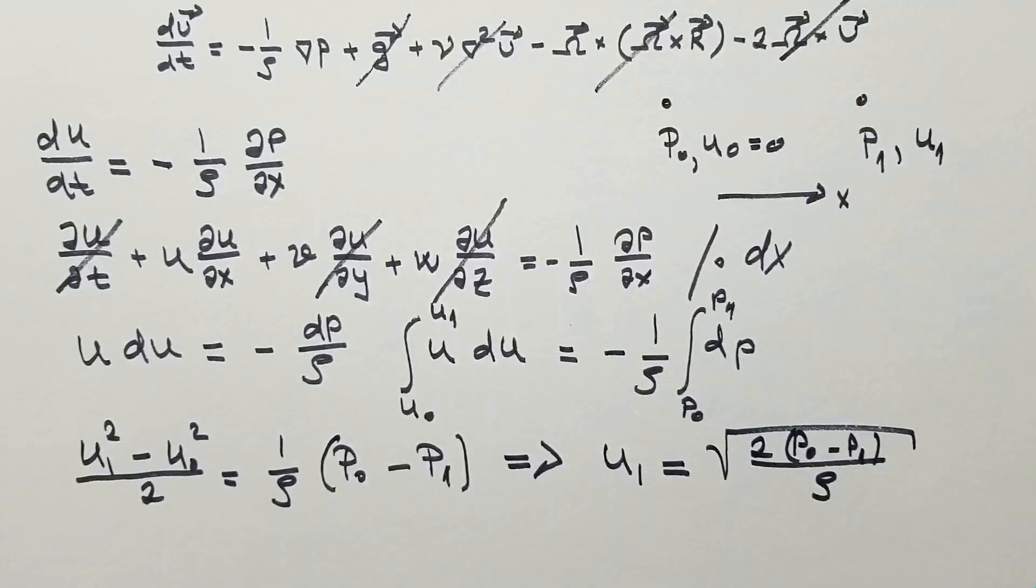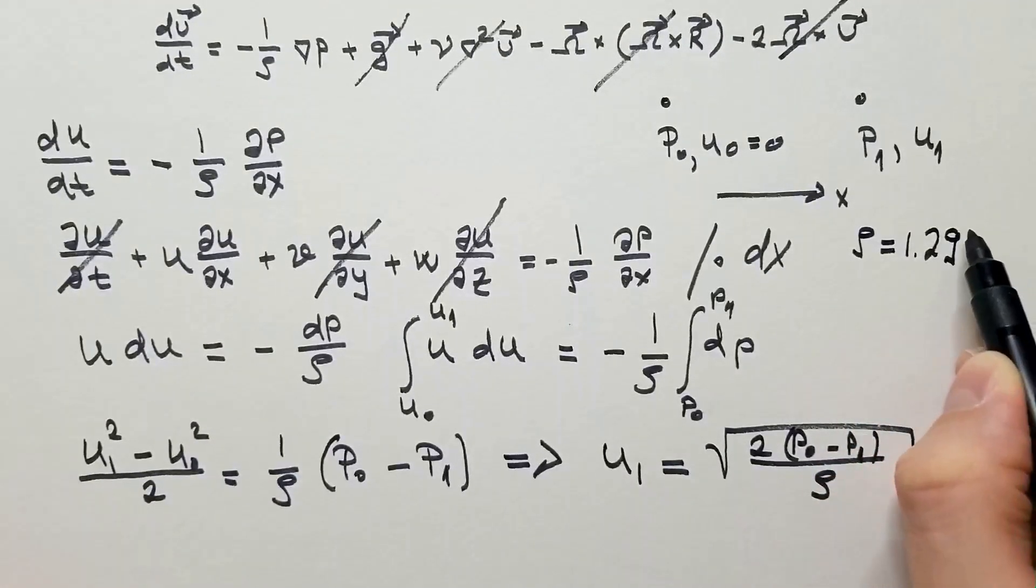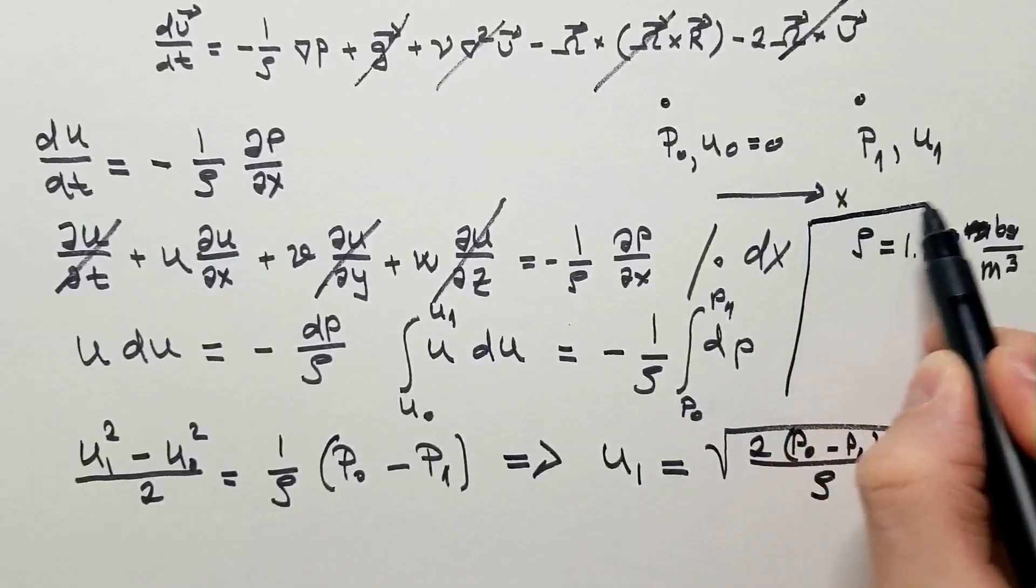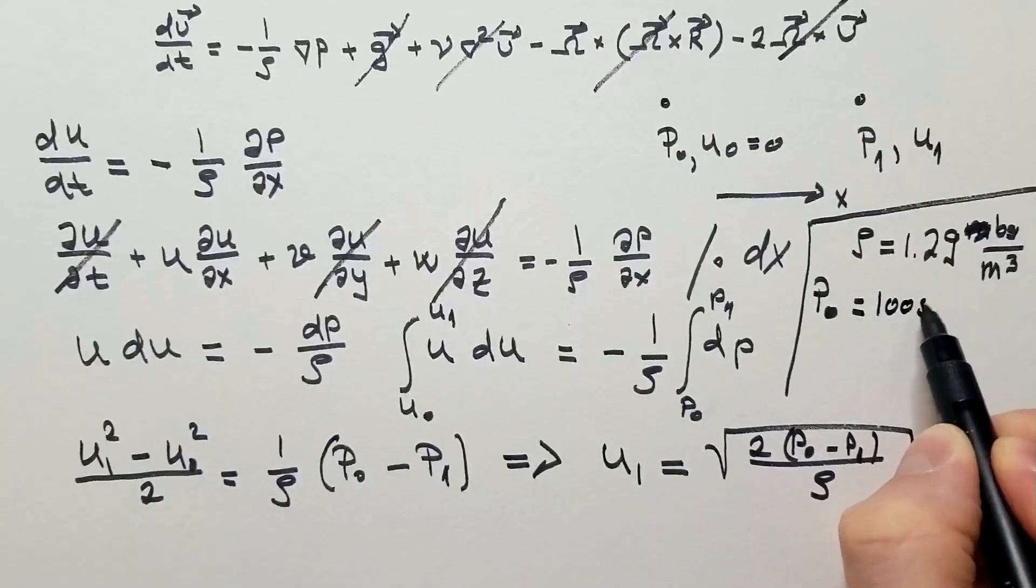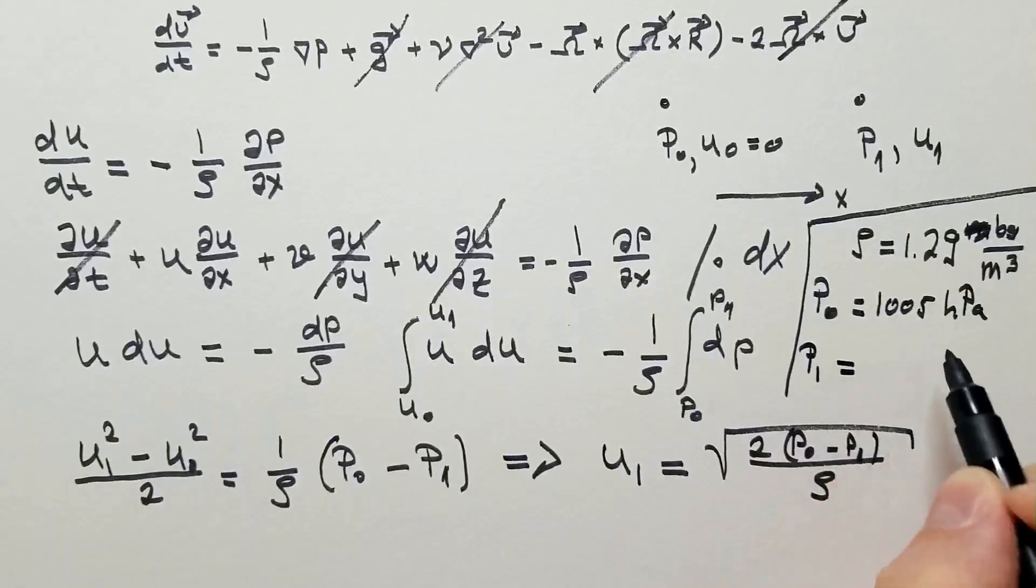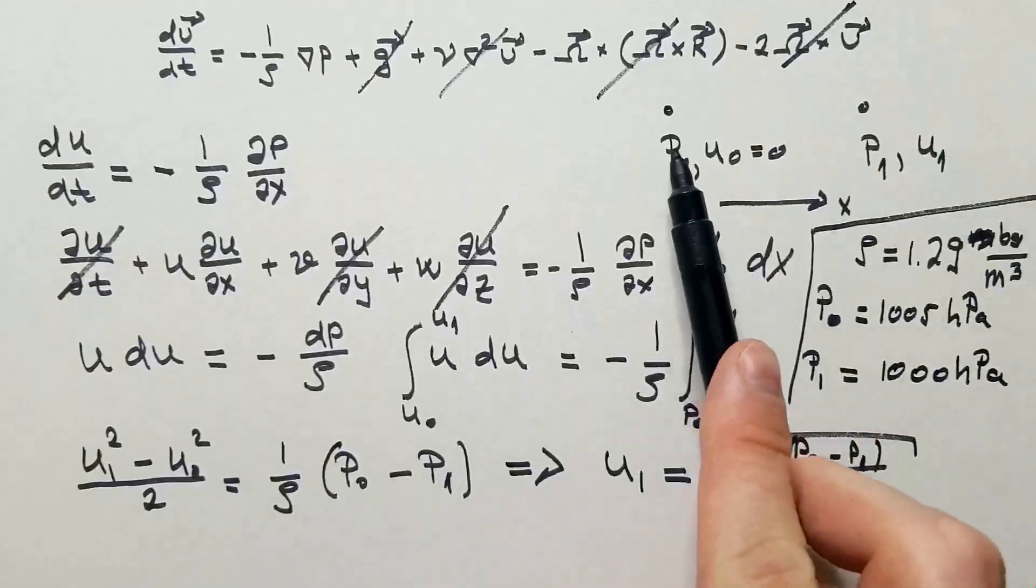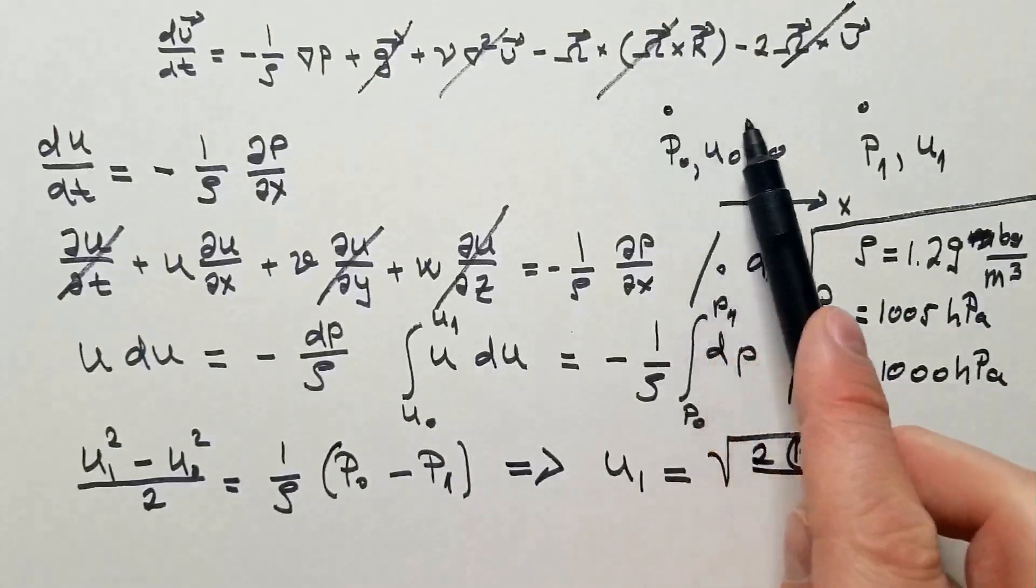So, let's take some reasonable values for density and pressure. Let's say the density is some normal value, 1.29 kg per cubic meter. Here, p0 is equal to, let's say, 1,005 hectopascals, which is also 1,005 millibars, and p1 is 1,000 hectopascals, which is 1,000 millibars, which means pressure p0 is higher than pressure p1, which means the air parcel will move from p0 to p1.